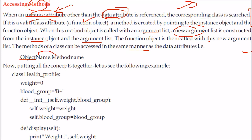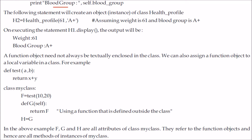Let us understand this with an example. We have a class HealthProfile with attributes weight and blood_group. The constructor takes self, weight, and blood_group and assigns them. We also have a display method. When we instantiate it — for example, h2 = HealthProfile(61, 'A+') — calling h2.display() will print 61 and A+. Note that the function object need not always be textually enclosed in the class definition.